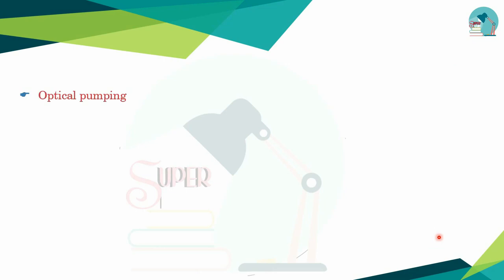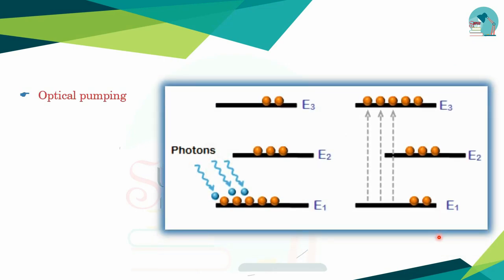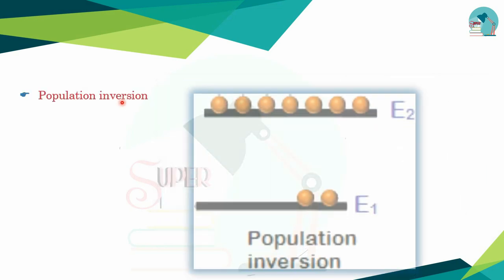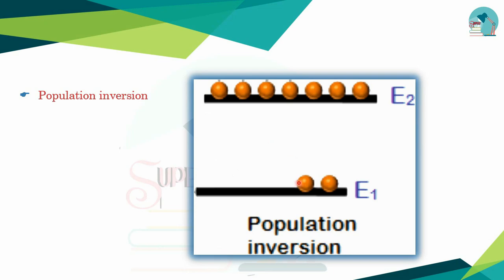Next is optical pumping. If you pump atoms into the upper energy level, you observe more atoms moving to the upper energy level. Next is population inversion — the normal population has more atoms in the upper energy level.